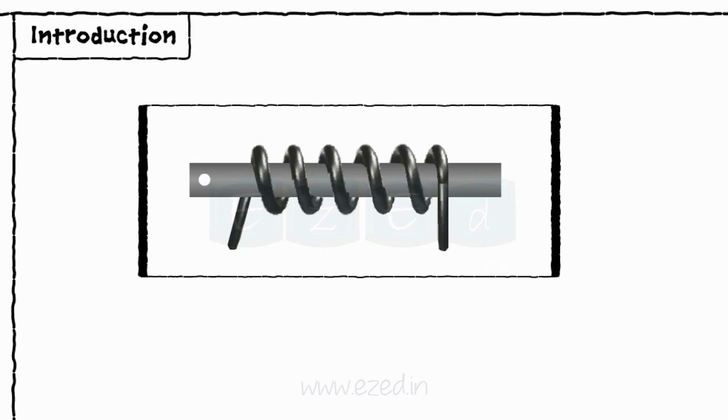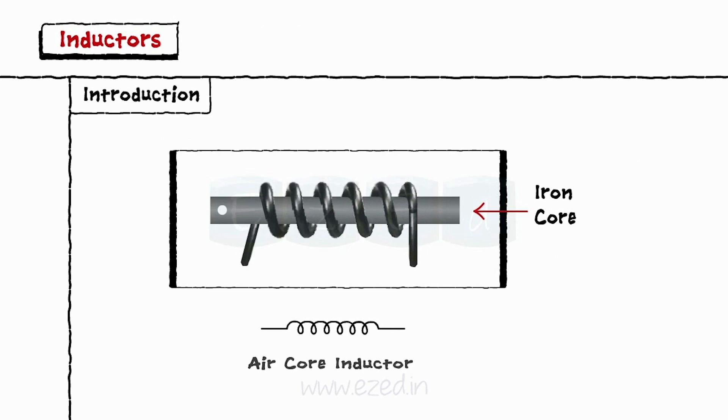The material on which the coils are wrapped is called the core of an inductor. When the coil is wound on a metal, we get an iron core inductor. And when there is no material and just circular windings, we get an air core inductor.